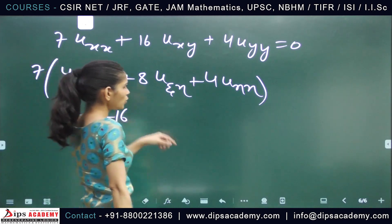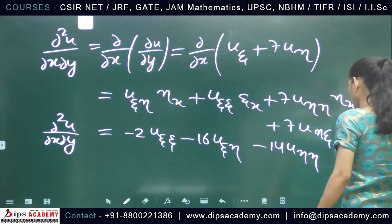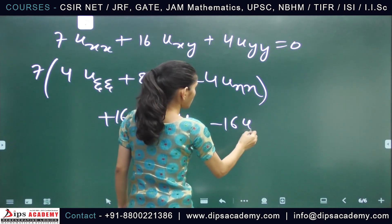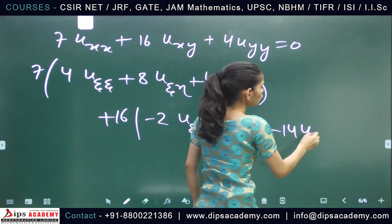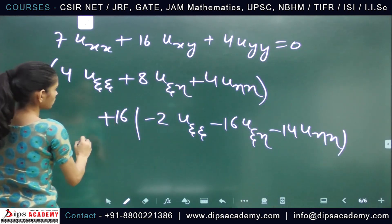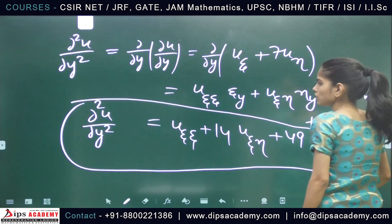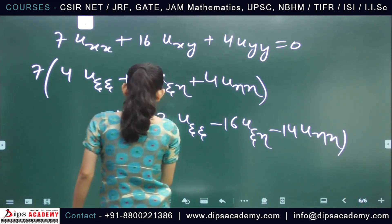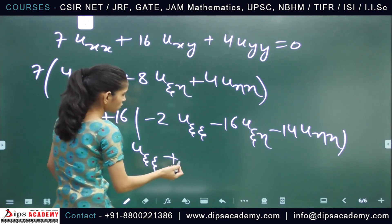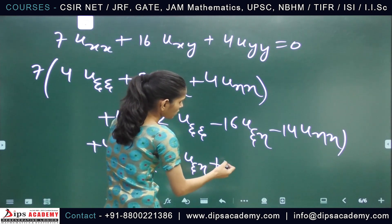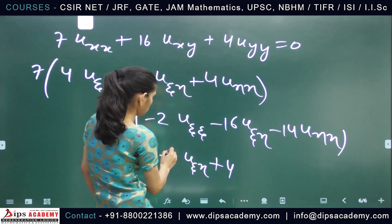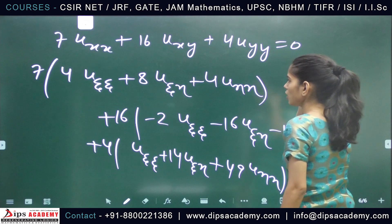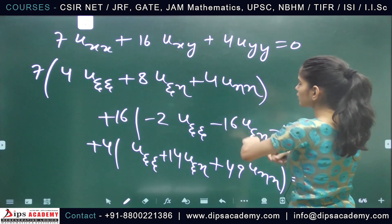The 16u_xy term gives 16 × (-2u_ξξ - 16u_ξη - 14u_ηη) = -32u_ξξ - 256u_ξη - 224u_ηη. The 4u_yy term gives 4 × (u_ξξ + 14u_ξη + 49u_ηη) = 4u_ξξ + 56u_ξη + 196u_ηη. Summing all terms gives our transformed equation equal to zero.